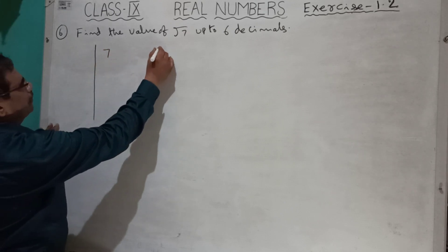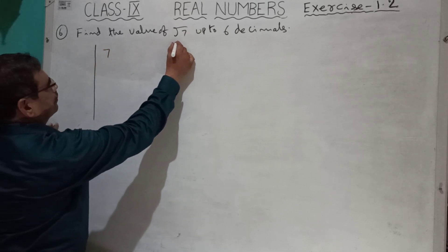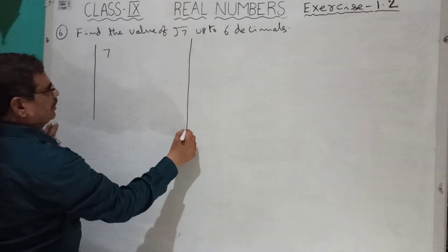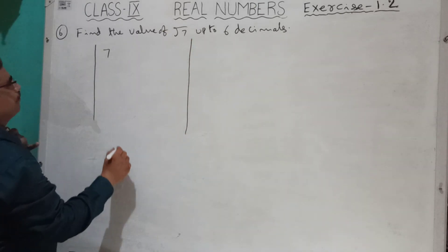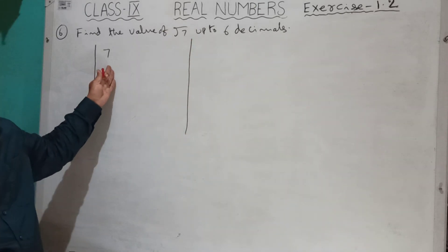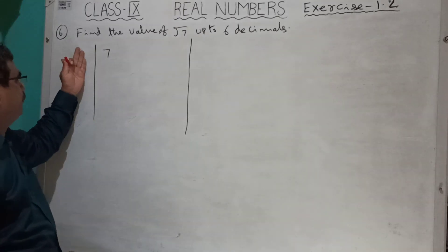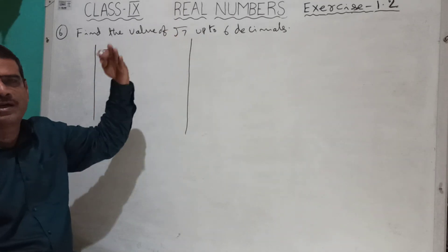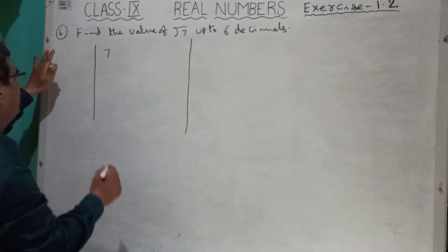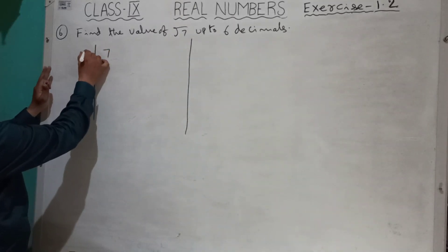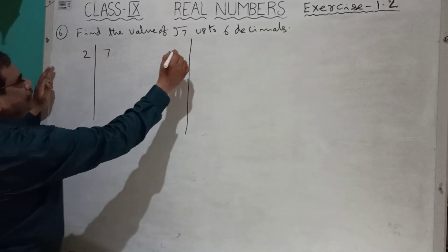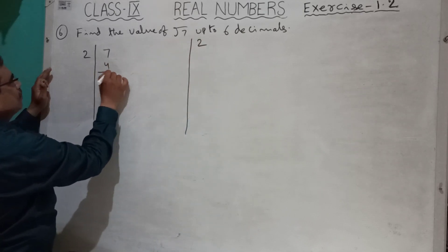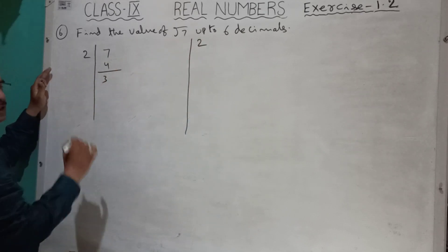Here 7 is there. Which level? 3. If you write 3, here also 3 — 3 threes are 9. 9 is a bigger number, so I write only 2. Here also 2, here also 2. 2 twos are 4. So the answer is 4, balance is 3.